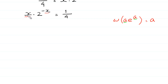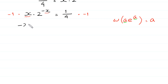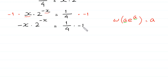To make the x the same as negative x, we multiply both sides of this equation by negative 1. At the left side, negative 1 times x times 2^(negative x) equals 1 over 4 times negative 1. So we get negative x times 2^(negative x) equals negative 1 over 4.